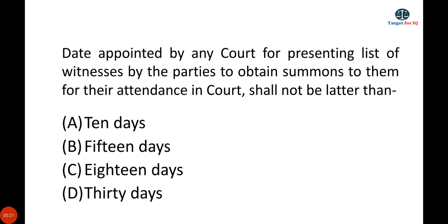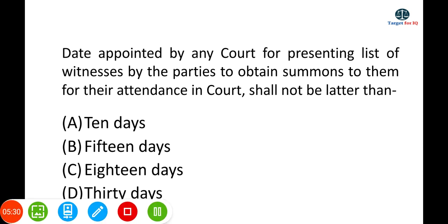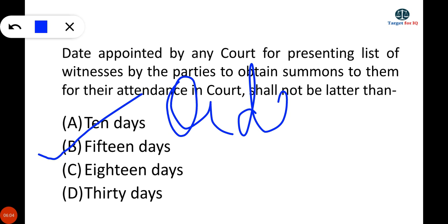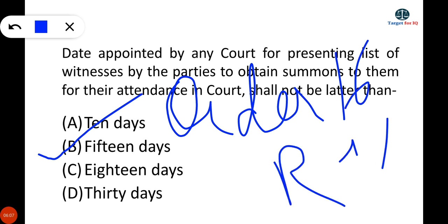The next question is: the date appointed by any court for presenting the list of witnesses by the parties to obtain summons for their attendance in court shall not be later than? The correct answer is 15 days. This is provided under Order 16, Rule 1 of CPC — parties must present the list of witnesses within 15 days.